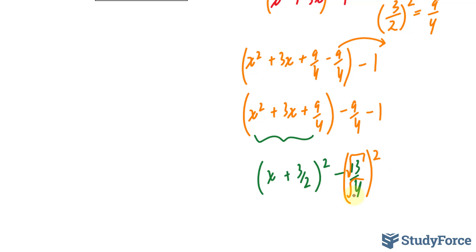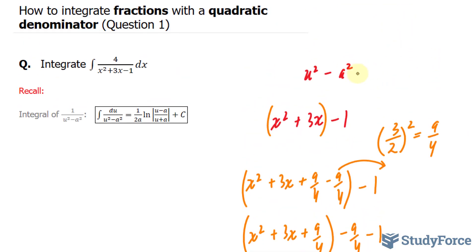And by doing that you end up with 13 over 4. But the difference now is that this term is a perfect square. Exactly what we wanted when we started. We wanted a perfect square here, a perfect square here, and those two perfect squares being subtracted. This is known as the difference of squares.